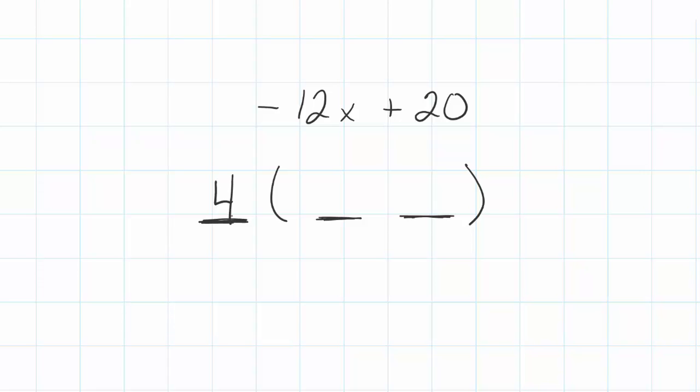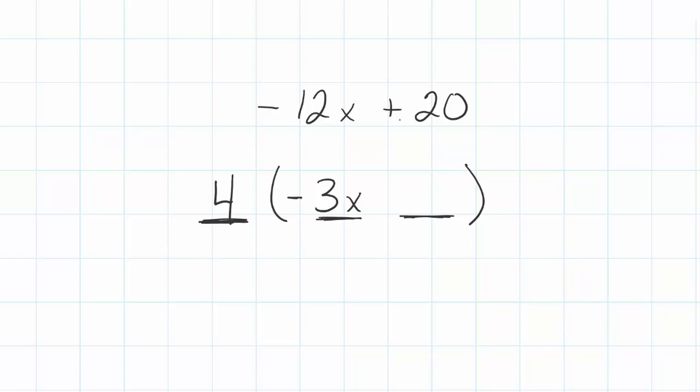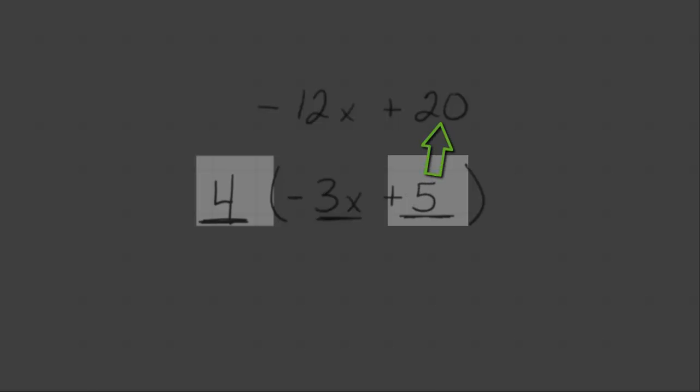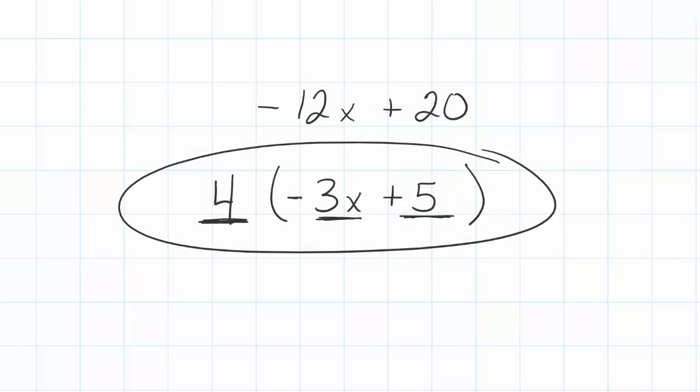Division seems to be a little bit tougher than multiplication for some reason in middle school students. So 4 times what is going to give me negative 12x? Well, I know it's going to be an x. I know it's got to be negative - positive times a negative will give us a negative. So 4 times what gives us 12? Well, that's 3. So I have a negative 3x inside the parentheses. Then I have to figure out 4 times what gives me positive 20, and that's going to be a positive 5. That's it. This right here is our answer when we factor negative 12x plus 20.